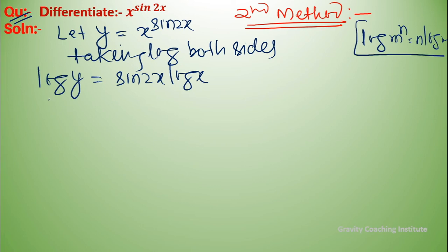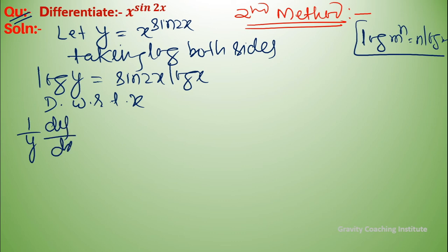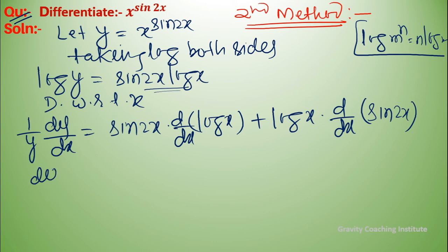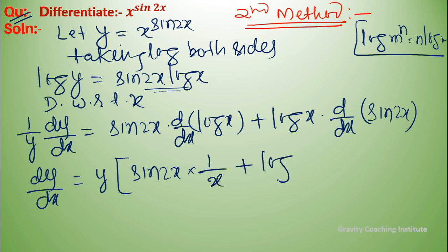Now differentiate with respect to x. One upon y into dy/dx equals, using the product rule: sin 2x into differentiation of log x, plus log x into differentiation of sin 2x. So dy/dx equals y into sin 2x into 1 upon x plus log x into cos 2x into 2.